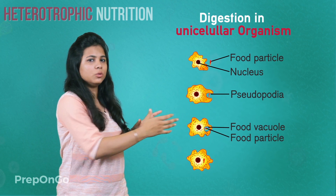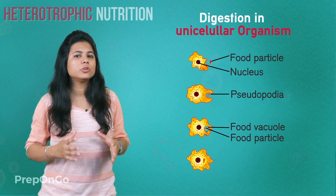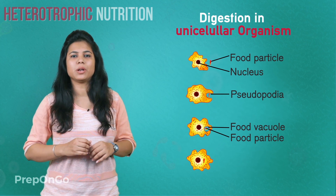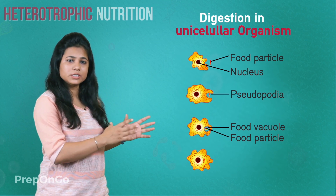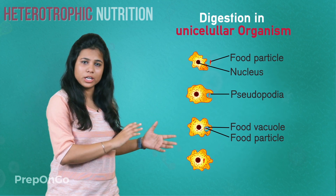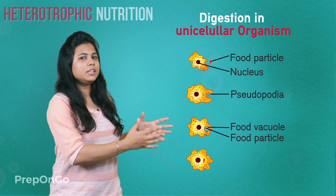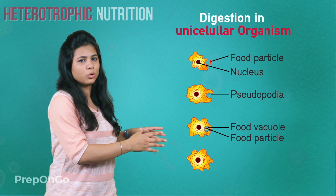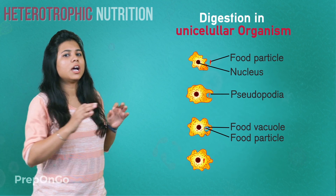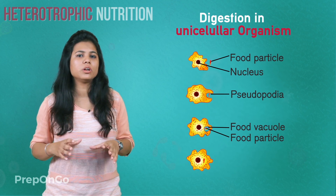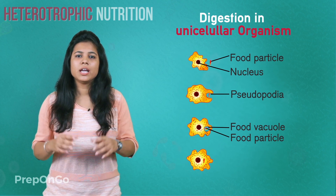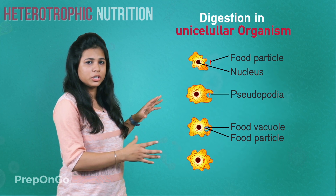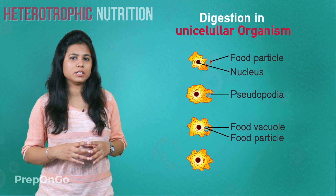Now the food vacuole has a function — it breaks down the complex food particles into simpler ones. Since the food is broken down into simpler particles, these simpler food particles diffuse into the cytoplasm of the whole amoeba, and the undigested food is thrown out through the cell surface. In this simple way, the amoeba derives nutrition from food particles.